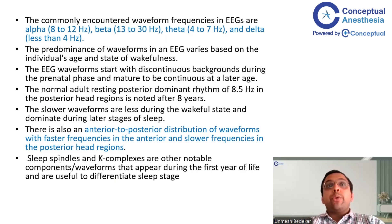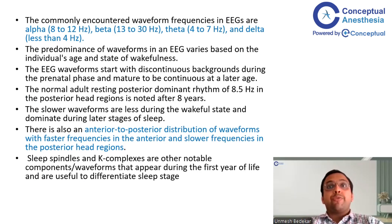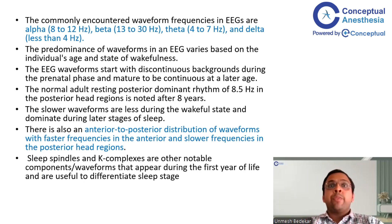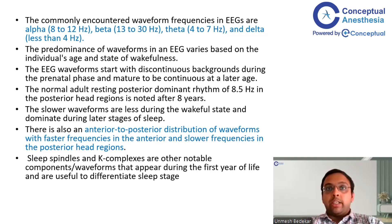As a thumb rule when reading EEG, we must know four waveform frequencies: alpha, beta, theta, and delta. Alpha lies in the range of 8–12 Hz, beta from 13–30 Hz, theta from 4–7 Hz, and delta less than 4 Hz.